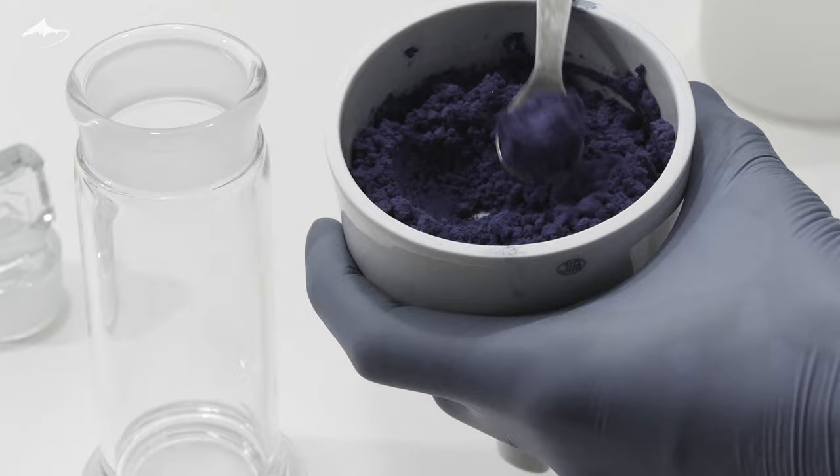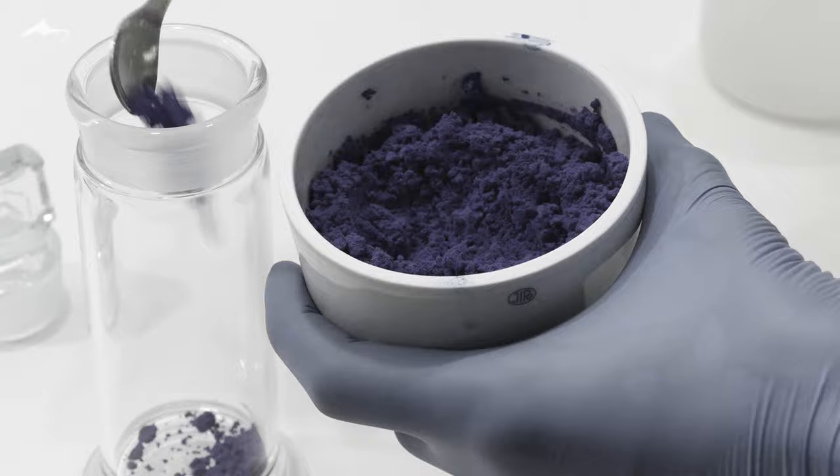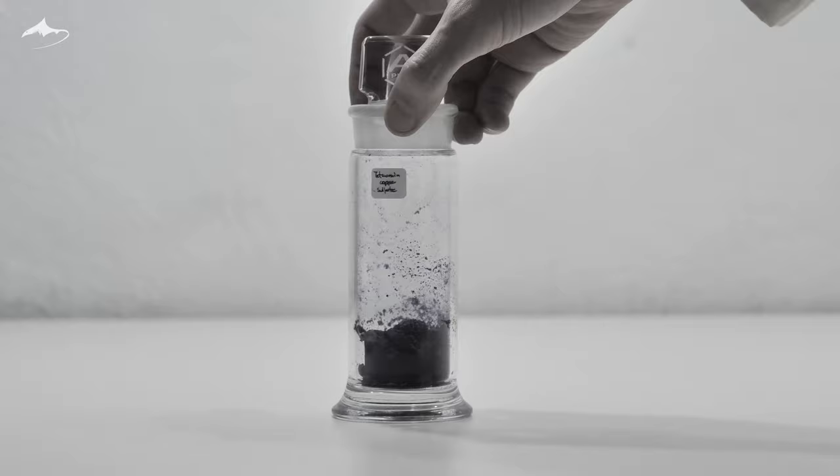Welcome. In a past project I prepared about 20 grams of tetramine copper 2 sulfate monohydrate, a violet salt in the form of powder. I decided to try to recrystallize it as I could not find much information about this process online.